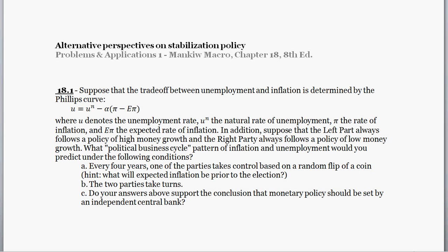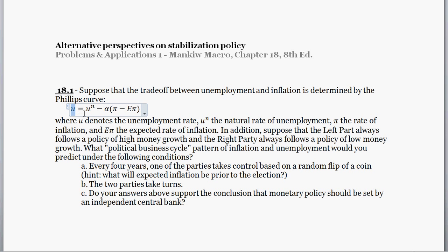This problem is borrowed from Mankiw's Macroeconomics, Chapter 18, Problem 1. Chapter 18 in the edition I have is 'Alternative Perspectives on Stabilization Policy,' so you might have a different edition. In this question we're asked the following: suppose that the trade-off between unemployment and inflation is derived by the following Phillips curve, where current unemployment equals the natural rate of unemployment minus some scalar times the difference between actual realized inflation and expected inflation.